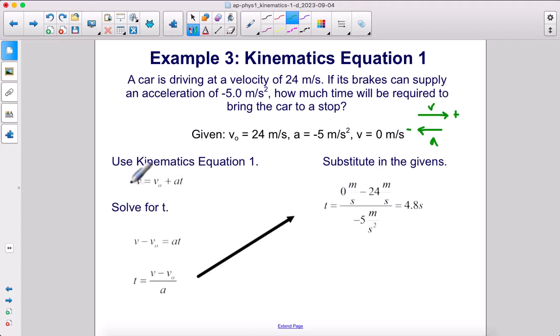We're going to use kinematics equation one. We are going to solve for time. First, subtract V-naught to the other side, then divide both sides by acceleration. Plug in your numbers. Don't forget to plug in negative 5 for acceleration. We get 4.8 seconds.